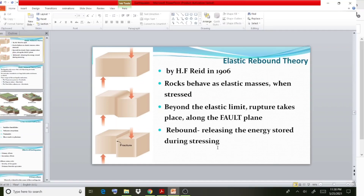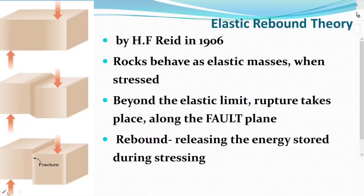This theory was brought out by Reid in 1906. The key statement is that rocks behave as elastic masses when stressed. If you observe clearly, the rock masses are provided here, and if you take the case of elastic rebound theory, you can see how it is explained. Rock masses behave as an elastic material — that is the first statement.